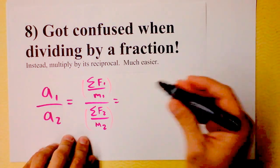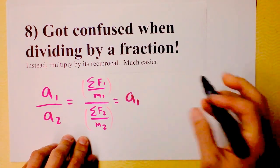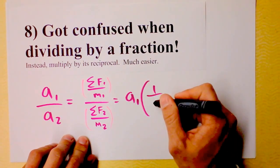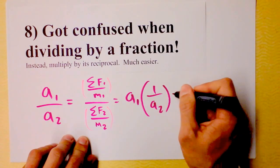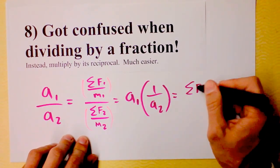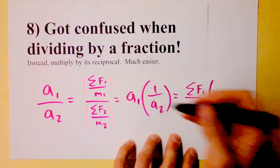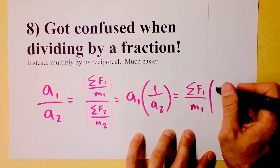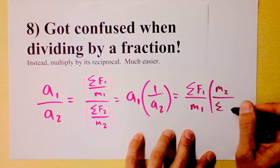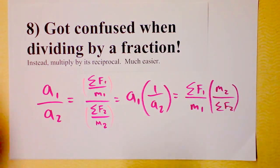What I suggest you do instead is take a1 and multiply it by 1 over a2, and that looks like this. It's going to be the net force on 1 divided by the mass on 1, multiplied by—now 1 over a2 is going to be m2 divided by the net force on 2—and that will help you a lot.